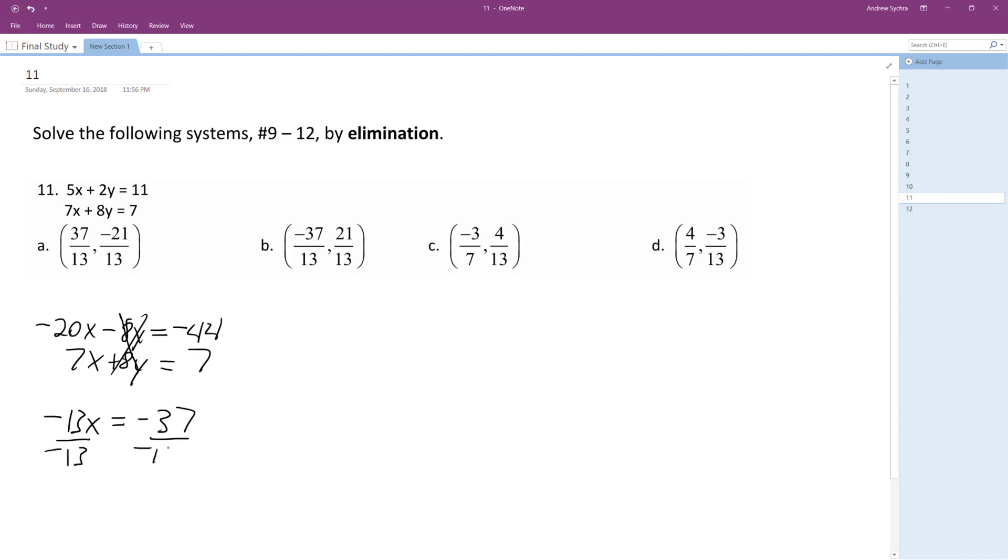So divide by negative 13. x is equal to 37 over 13.